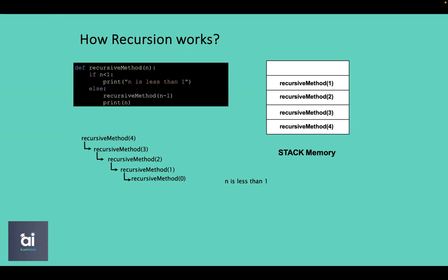To continue execution, the system refers to stack memory. The last method pushed — recursive method with parameter 1 — is executed first. It prints 1, because after calling the recursive method with parameter 0 (which is 1 minus 1), it prints n, and in this case n is 1. So the output from the recursive method with parameter 1 is 1.